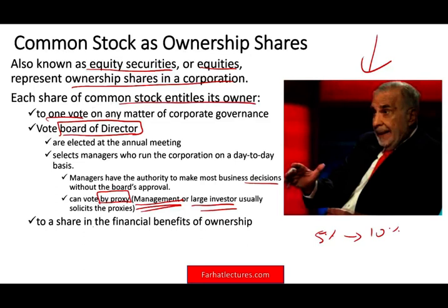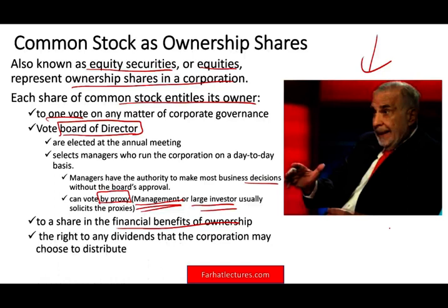If you have shares of stock, you are entitled to share in the financial benefit of ownership. If the company makes a profit and decides to distribute it, you get a proportional share — the right to any dividend the corporation may choose to distribute. But remember, you also share in the financial risk. If the company goes belly up, you carry the risk as the owner and shareholder. Also, you have the right to sell your stock. For publicly traded companies, that's not an issue whatsoever.